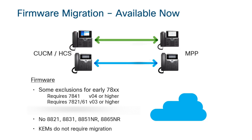Let's talk about which devices are eligible to be migrated to MPP firmware. Basically the 7800 series and the 8800 series. For the 7800 series, if it's version 4 or higher on the 7841, you're good to go. On the 7821 to 61, it's version 3 or higher. For the 8800 series, we exclude the 8821, 8831, and the NR, which is the no radio. And the key expansion modules require no migration.